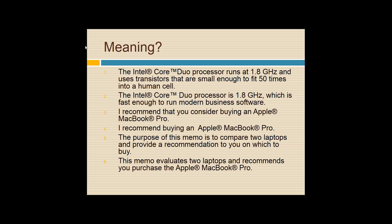You've got all these computer specifications you can't relate to real-world application. The real-world application is: this will run Microsoft Office very well. If you're comparing a MacBook and a Dell laptop, you might say 'I recommend that you consider buying an Apple MacBook Pro,' but focus on what the real verb is. You're really recommending that somebody buy — 'I recommend buying an Apple MacBook Pro.' This memo evaluates two laptops and recommends you purchase the Apple MacBook Pro.